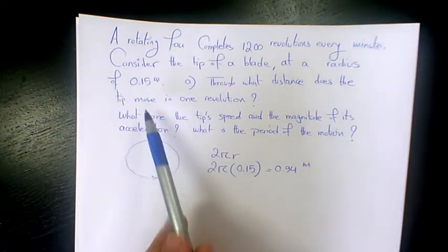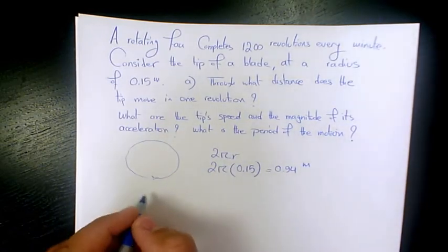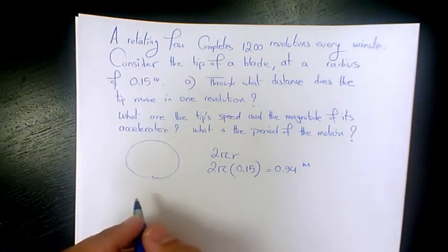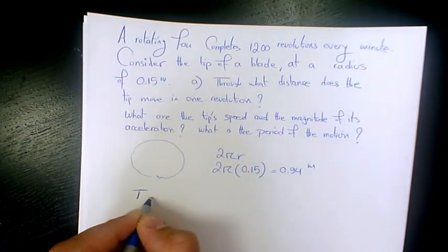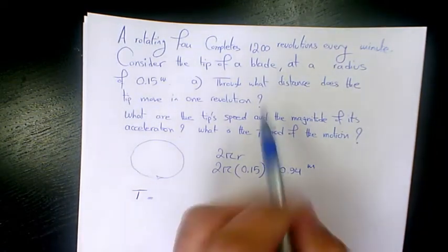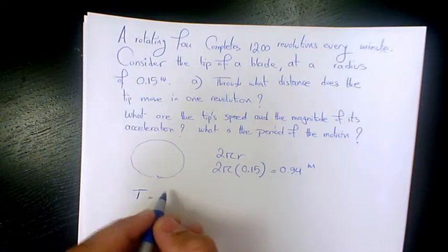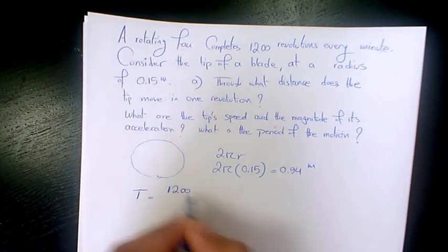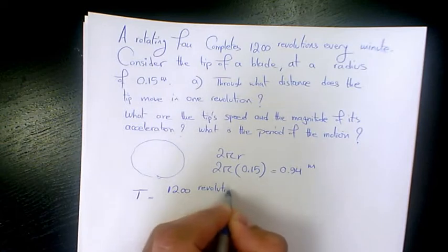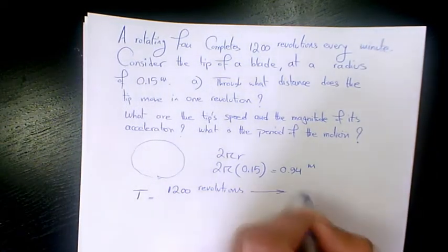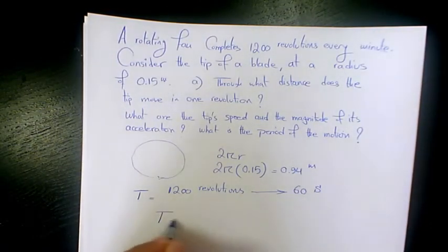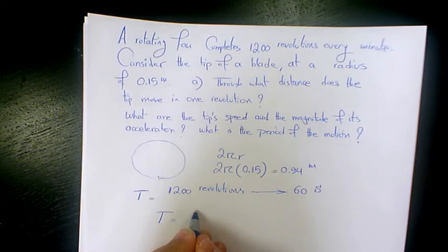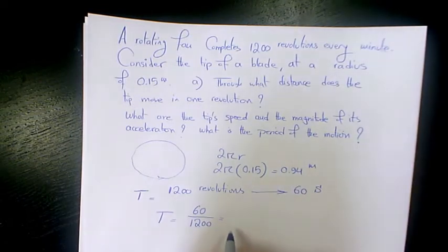Now we want to find out the period, speed, and acceleration. The period: it says 1200 revolutions per minute, which means 1200 revolutions in 60 seconds. So T equals 60 seconds divided by 1200, giving the time of one revolution. 60 divided by 1200 is 0.05 seconds.